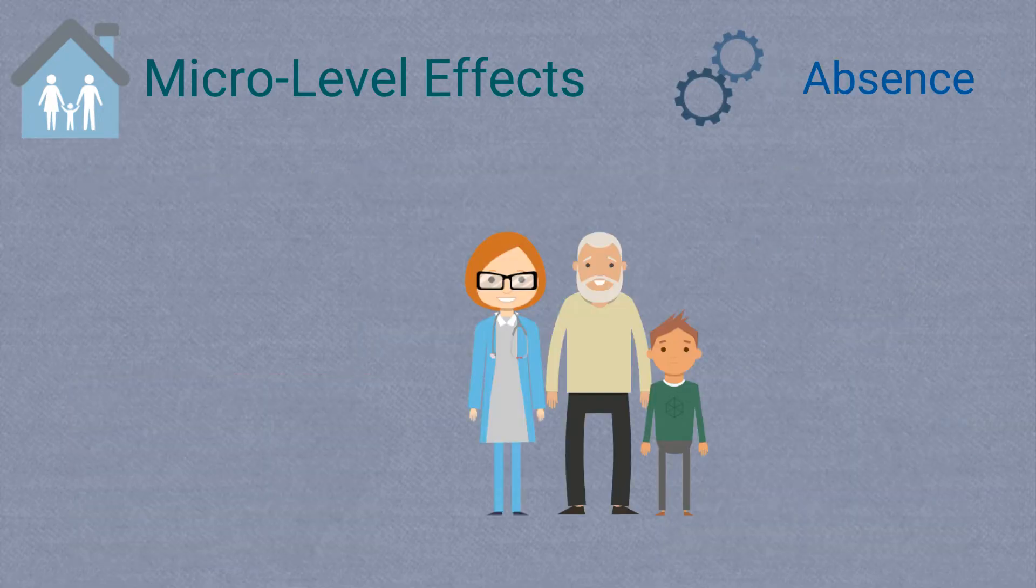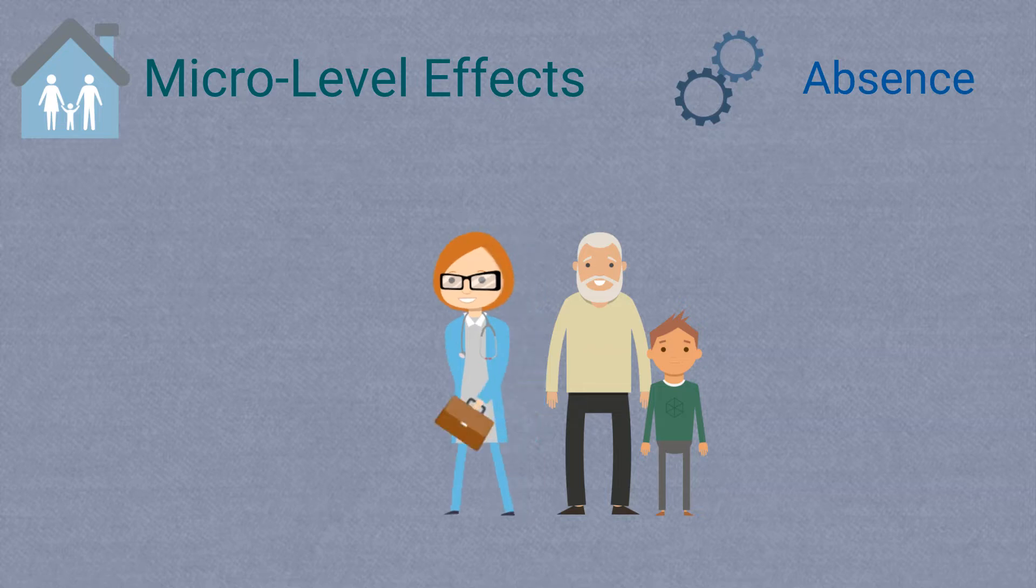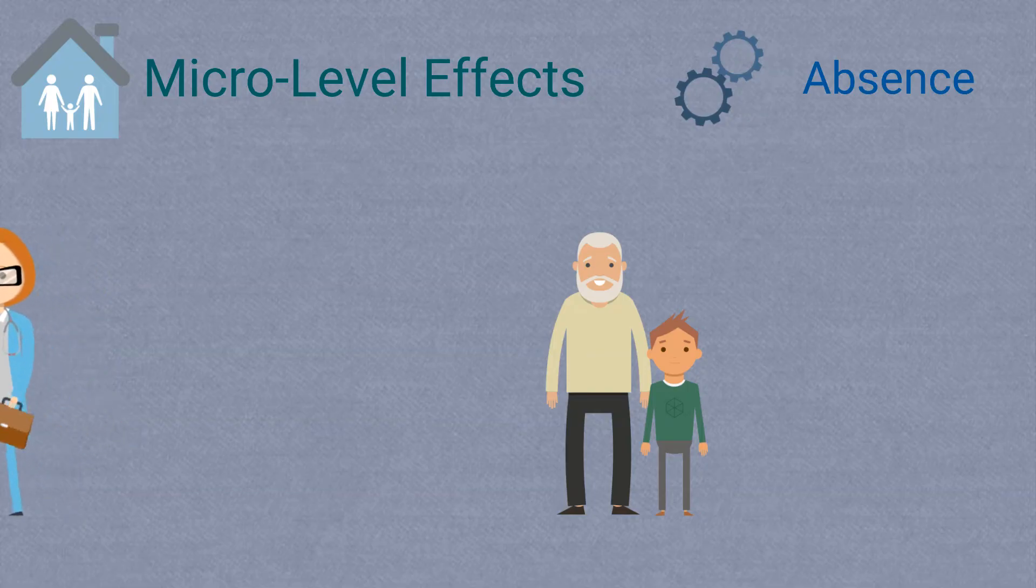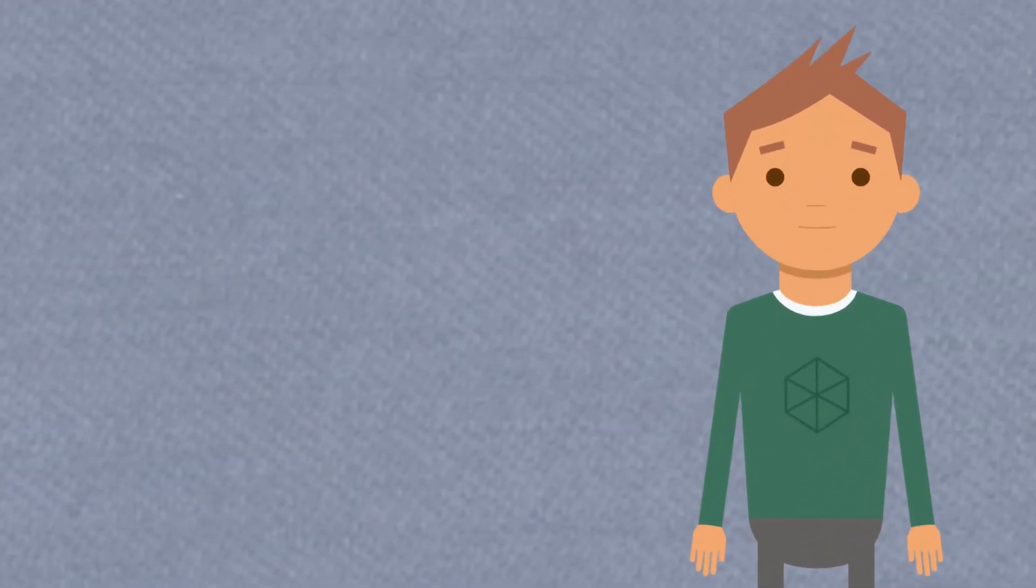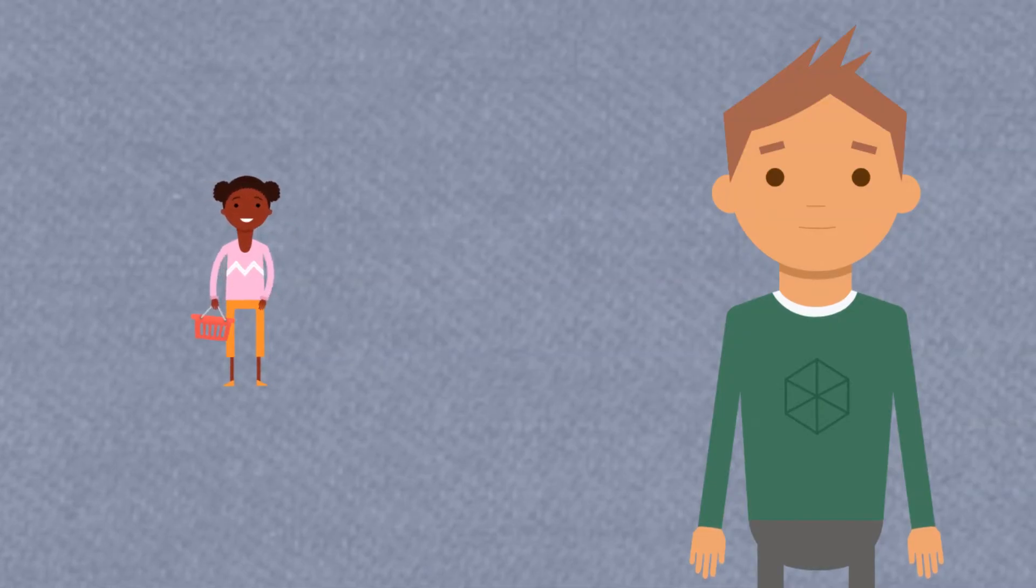The physical absence of a household member is another important mechanism through which migration can affect those who stay behind. This is particularly manifested when the person that leaves was a caregiver in the household. The way children in particular spend their time can change when a household member leaves because there may be more immediate need for children to step up and complete household duties, or even work for wages, possibly instead of attending school.